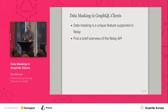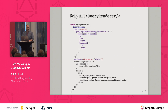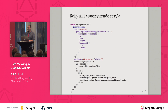First I'm going to do a quick overview of the Relay API. A query renderer is a React component provided by Relay that takes in a few props. Here's an example using the Star Wars API. The first prop is a GraphQL query, and the second prop is the variables for that query. This component will execute the query against your GraphQL server.